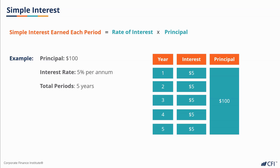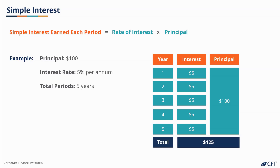In the middle column, you can see the interest payments of $5, which is 5% of the $100 principal paid every year. At the end of the 5-year term, the principal is also repaid, which is shown in the third column. The total amount of money one will get back for lending out the $100 today will be $125 in 5 years.